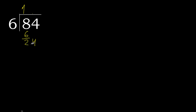Next, 4 — 24. 6 multiplied by 4 is 24, exact, is not greater. 24 minus 24 is 0.